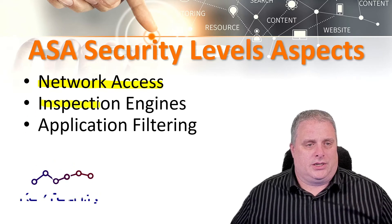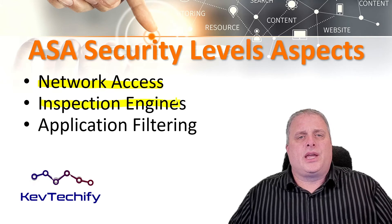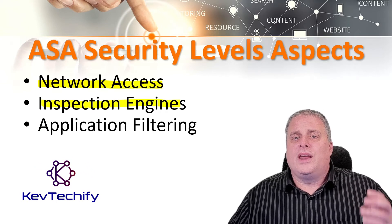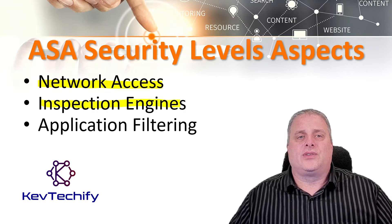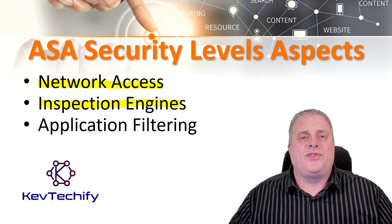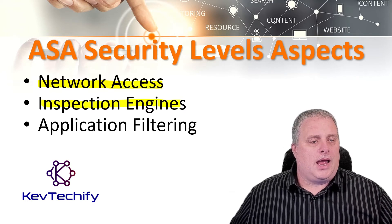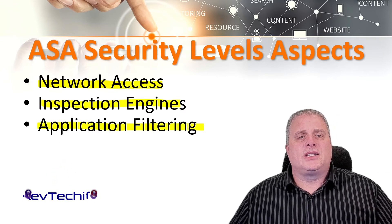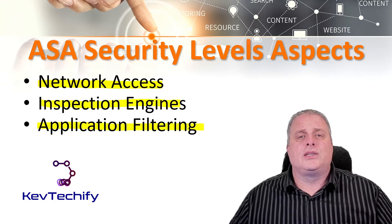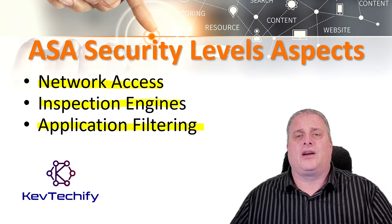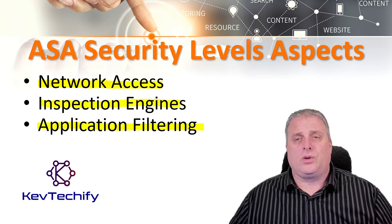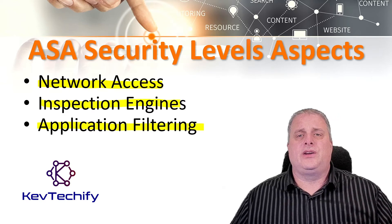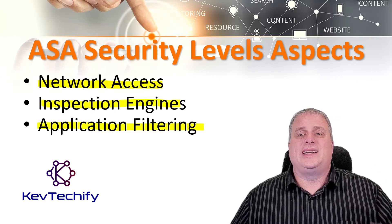Regarding inspection engines: some application inspection engines are dependent on security level. When interfaces have the same security level, the ASA inspects traffic in either direction. For application filtering, HTTPS and FTP filtering applies only for outbound connections from higher level to lower levels. If communication is enabled for interfaces with the same security level, traffic can be filtered in either direction.